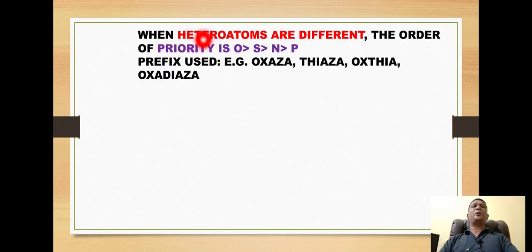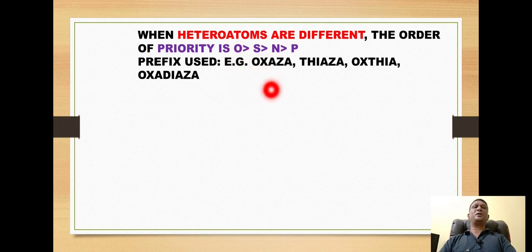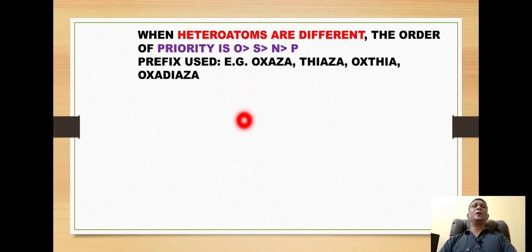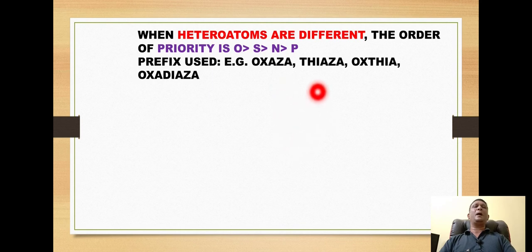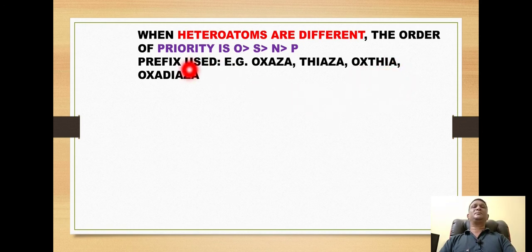When different heteroatoms are present, the order of priority is: oxygen, sulfur, nitrogen, and phosphorus — meaning oxygen has the highest priority. When two different heteroatoms are present, we use combined prefixes: 'oxaza' for oxygen and nitrogen, 'thiaza' for sulfur and nitrogen, 'oxathia' for oxygen and sulfur, and 'oxadiaza' for one oxygen and two nitrogens. In all cases, priority goes to oxygen, followed by sulfur, nitrogen, and phosphorus.